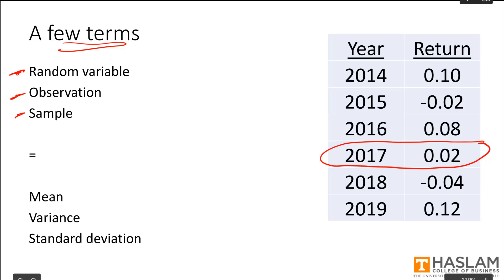And then finally, a sample. A sample is just a group of observations from a particular random variable. Here on the right, we see a sample containing six observations of a stock's return. These observations are annual observations. We see one that occurs in 2014, one in 2015, 16, 17, 18, and 19, and then here are the various values that the stock return took in those years.